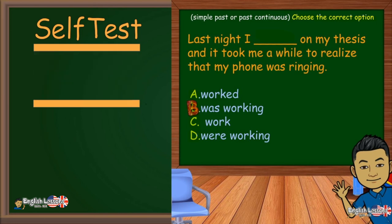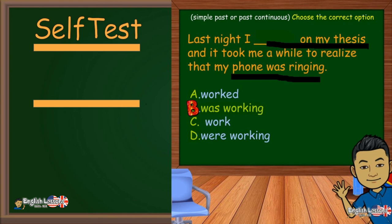Yes, B is the correct option: was working. Because here we are talking about two actions in progress at the same time in the past — was working on my thesis and the phone was ringing. Last night, I was working on my thesis and it took me a while to realize that my phone was ringing.